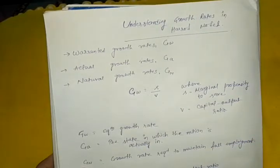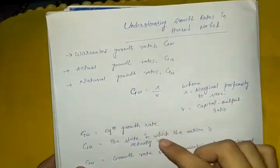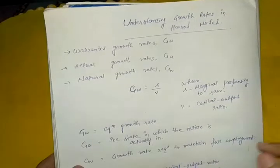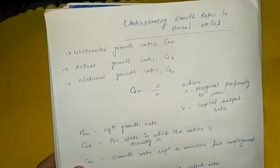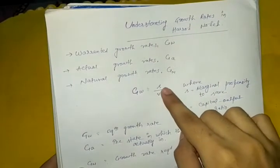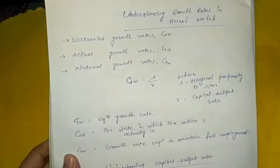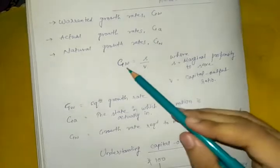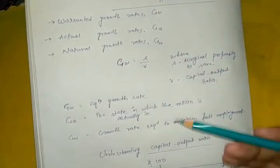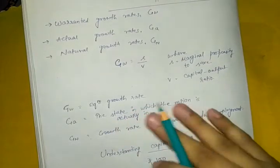According to different books, the definition of warranted growth rate is very simple — it is nothing but the equilibrium growth rate in order to maximize profit. But when I went through this model, there was one question continuously in my mind: why do we equate Gw as S divided by V, where S is the marginal propensity to save and V is the capital-output ratio? I was unable to understand why we divide MPS by capital-output ratio to get the warranted growth rate.